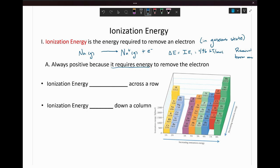The reason that we see a positive value for ionization energy is because it always requires energy to remove that electron. These types of reactions that require energy are called endothermic — reactions that require energy to be input in order for them to proceed. Looking at a chart of ionization energies, we can see that ionization energy increases as we go from left to right, with a few exceptions.